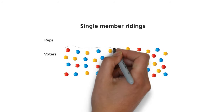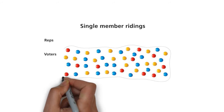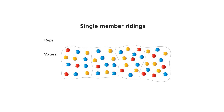The unfairness of our present system is the result of winner-take-all single-member ridings. Here's what can happen: in the first riding, there are more blue voters, so a blue rep is elected. This is repeated for the next riding and the next. In the last riding, there are a few more yellow voters, so a yellow rep is finally elected.